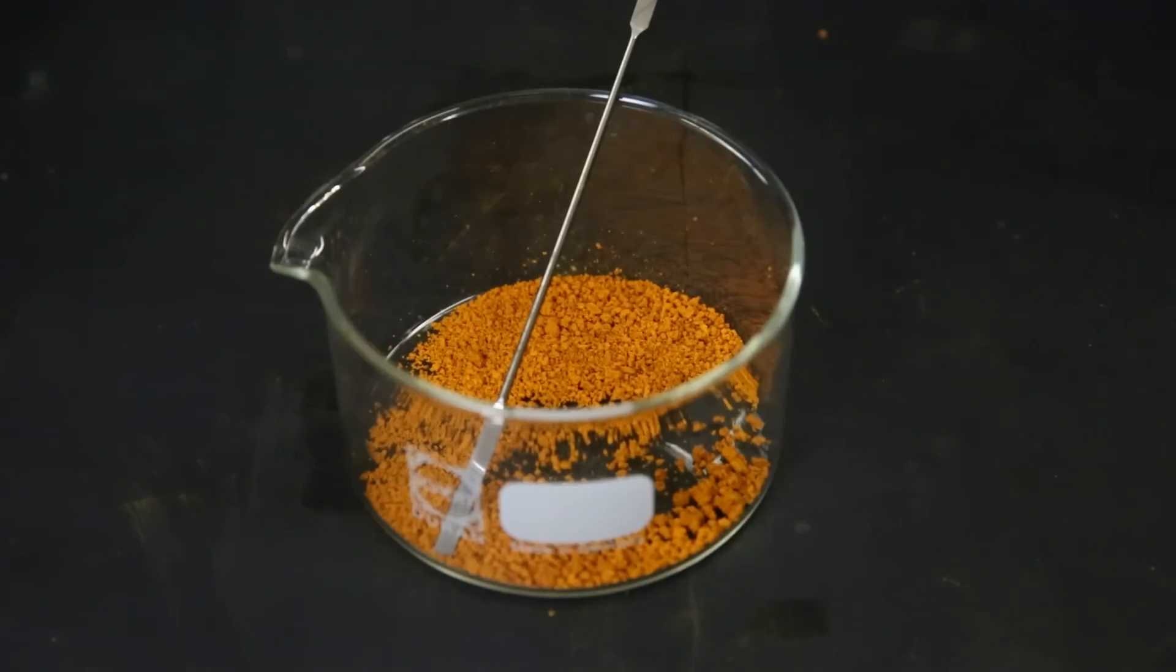Now this is the final yield of the bright orange ferrocene. To further purify it, I can do a sublimation. Since ferrocene sublimes readily, it can easily be purified that way.